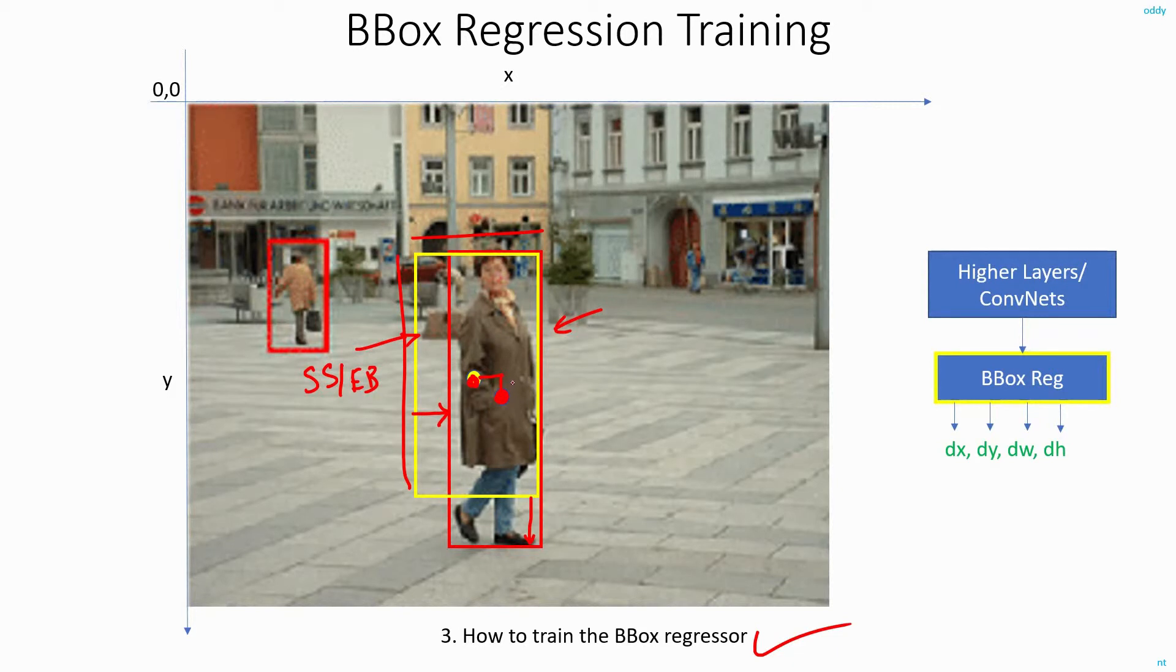Unlike the previous occasions where it just predicts four different values, in this case, in this occasion, it just needs to fine-tune the already existing region proposal, already existing bounding box.